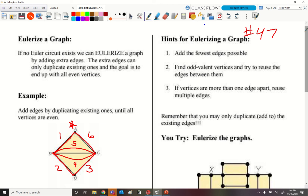Find the odd valent vertices. That means the edges, odd edges. So at the vertices, remember, every edge going to it is referred to as a valence. But the vertices are the dots. And try to reuse the edge between them. If vertices are more than one edge apart, we use multiple edges.